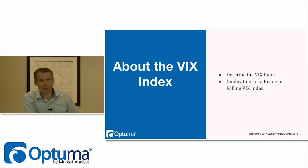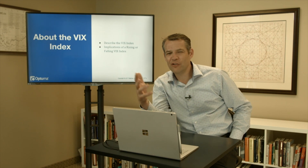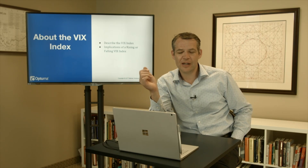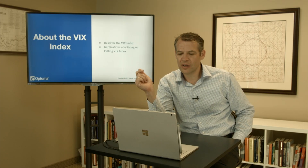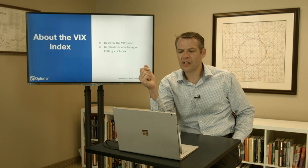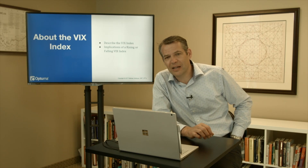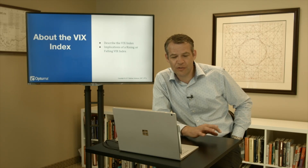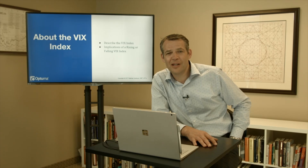For CMT1, you need to be able to describe the VIX index using implied volatility concepts and explain the implications of rising or falling VIX on price. For CMT2, you need to calculate the 30-day expected movement of an index or stock, explain the relationship between VIX and market movement, and interpret volatility signals as part of a market forecast. That wraps up the VIX — it ties together with implied volatility and the broader options studies group. Thanks for watching and we'll continue with the next lesson.